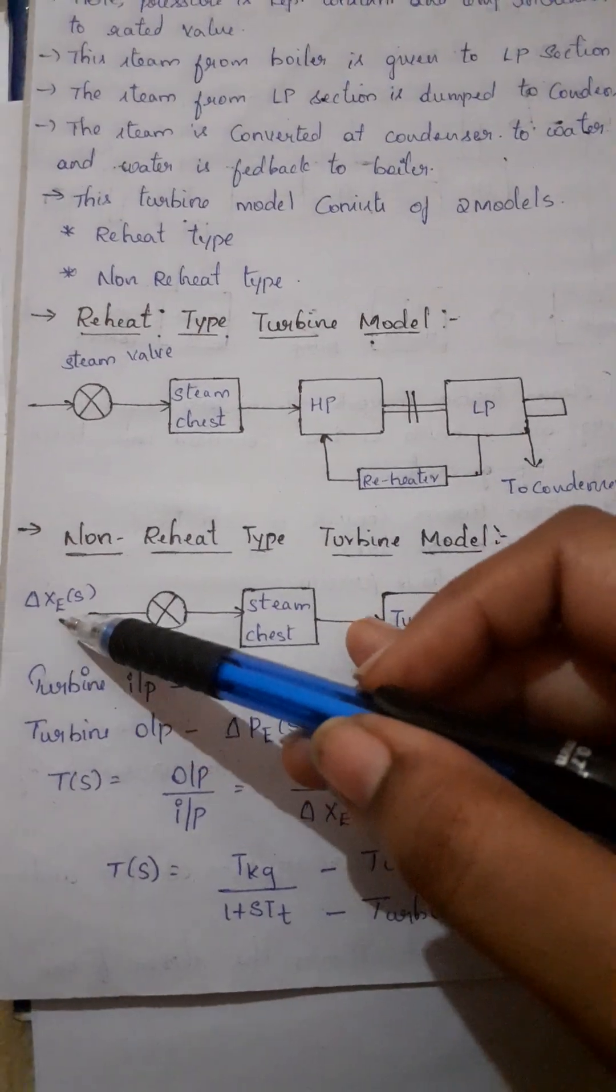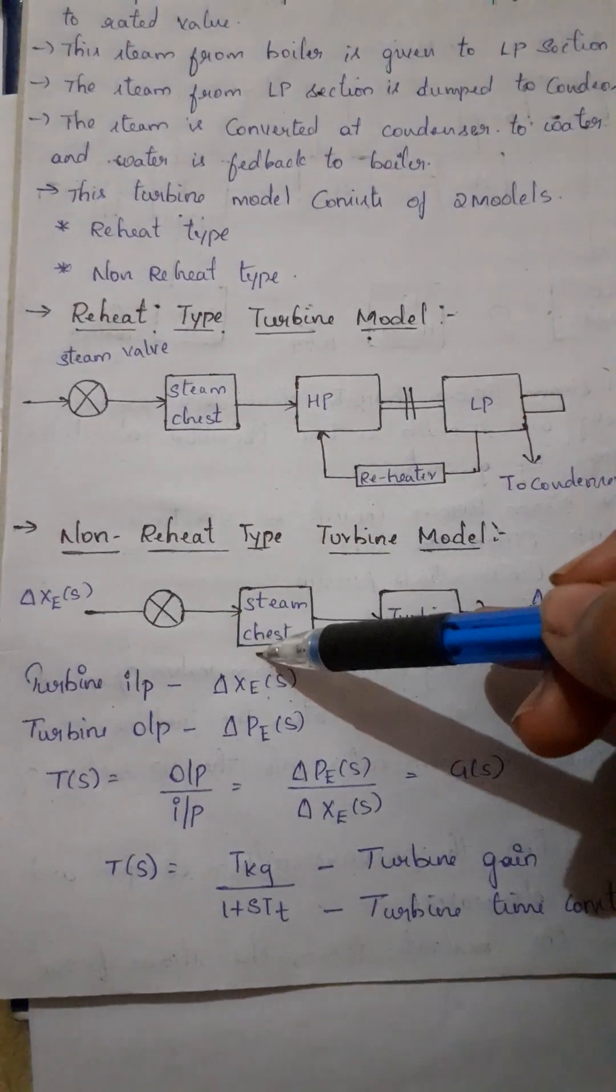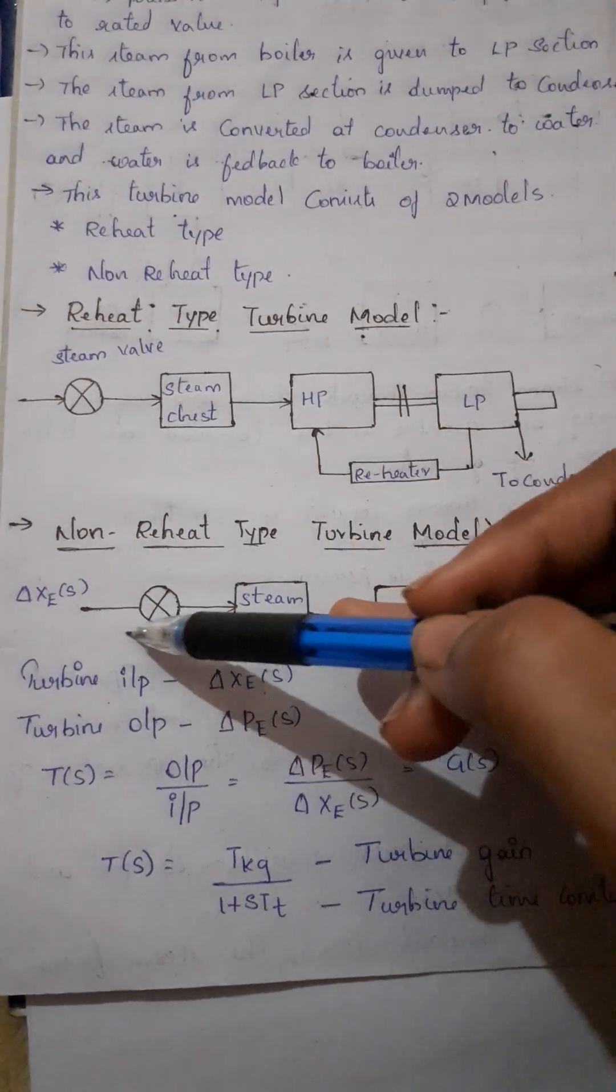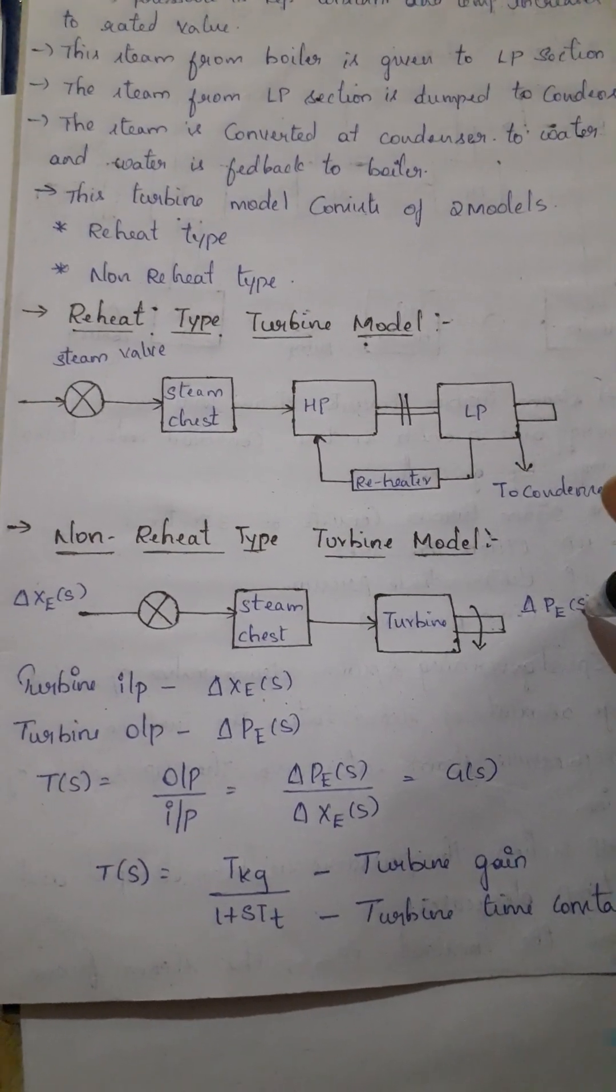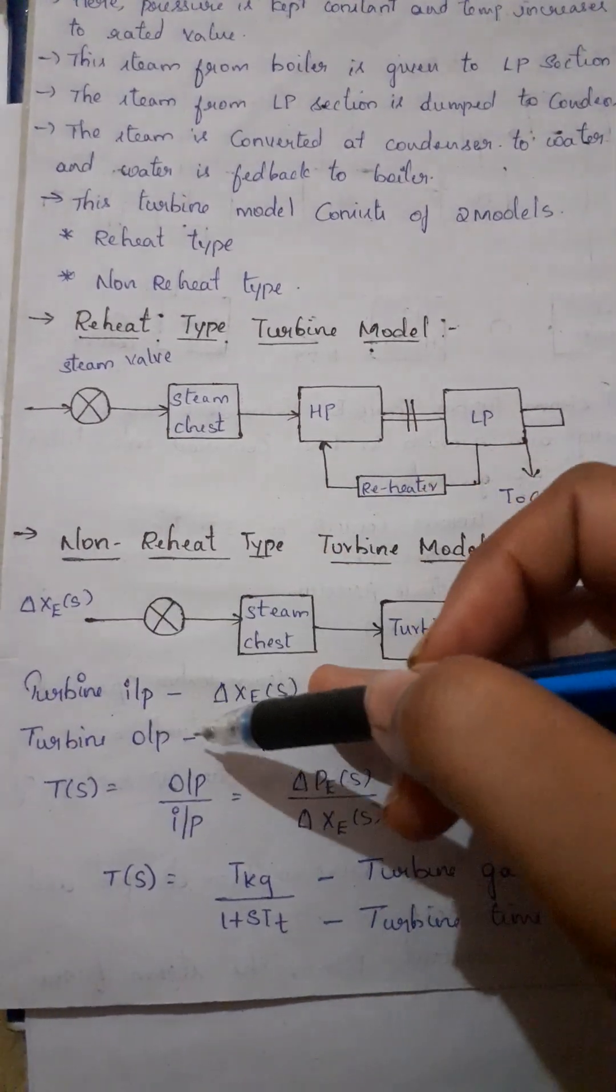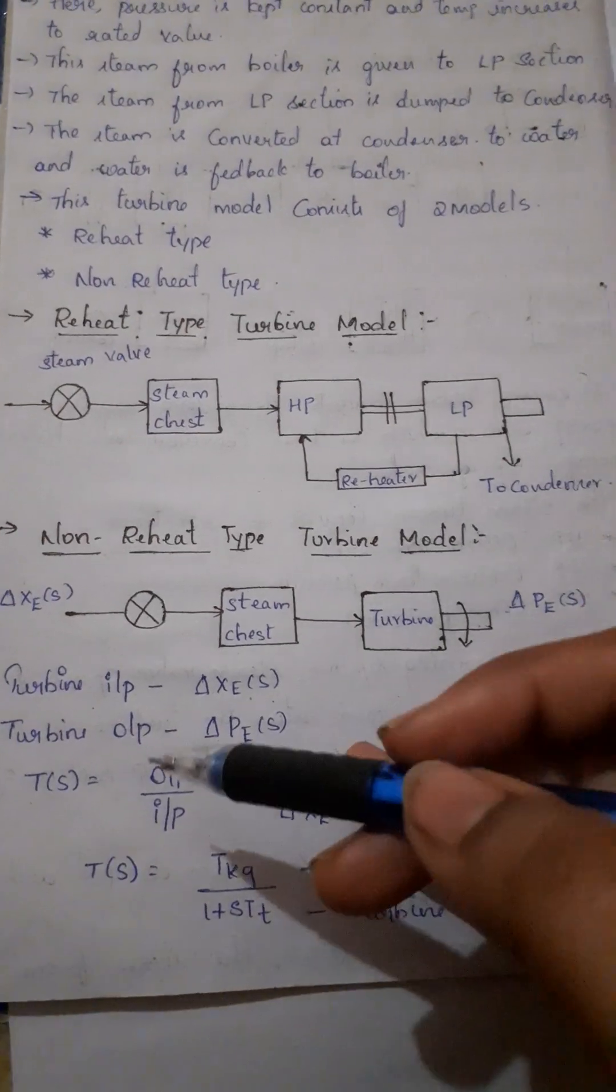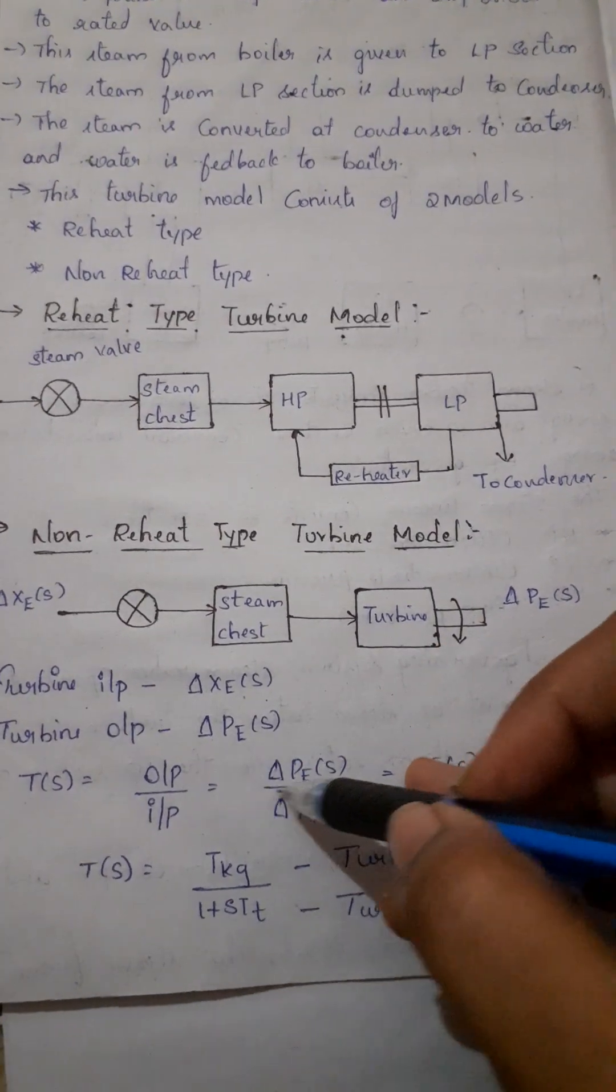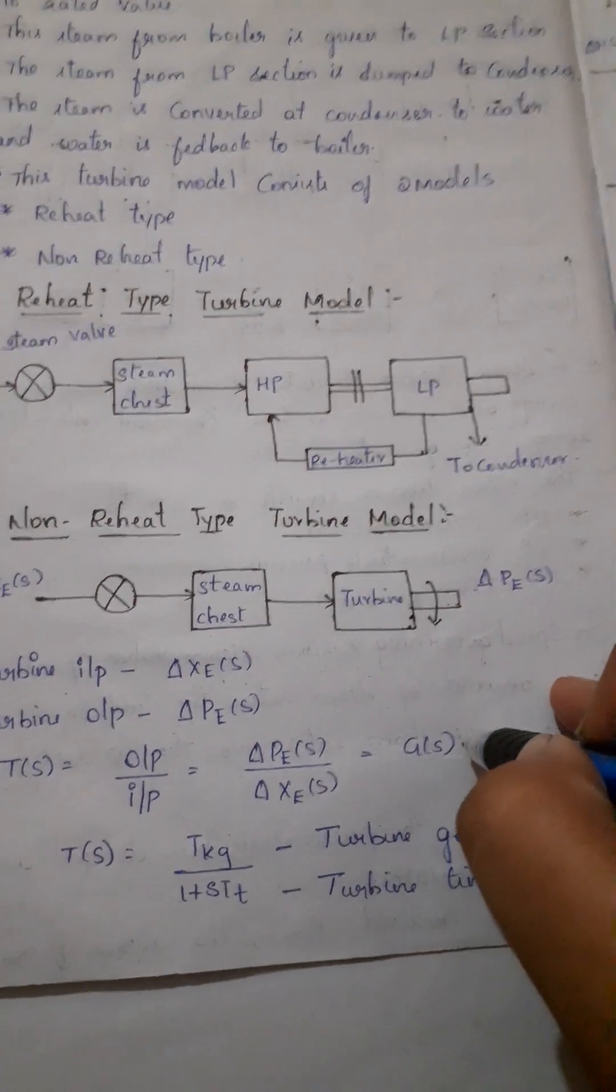When we observe, we have delta xe of s. This will be the steam chest and this is the steam valve. Same as it is here, the steam valve will be here. This is the turbine. The output will be delta pe of s. Here we have the same. Input is xe of s and output is pe of s. We have a transfer function, output by input. It will be delta pe of s by delta xe of s. This will be the G of s.